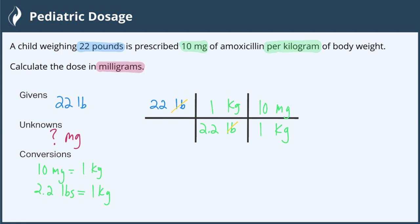Again, we put kilograms on the bottom so that it can cancel out with the kilograms that was already in our dimensional analysis table. This leaves us with milligrams as our final unit, which is what we were looking for.